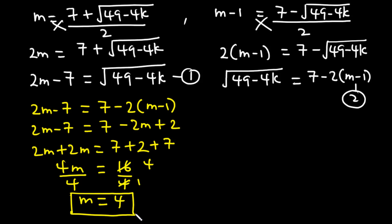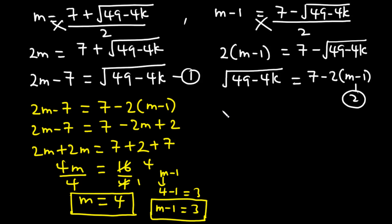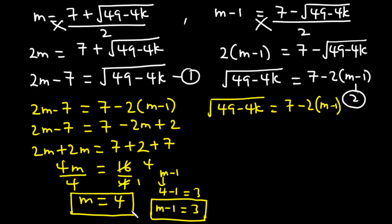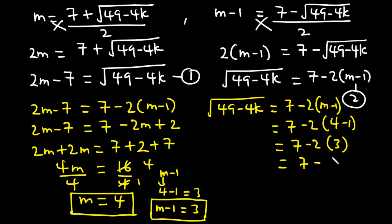So one of the roots is M equals 4, and M minus 1 equals 3, which is the second root of the equation. To find the value of K, using equation 2: the square root of 49 minus 4K equals 7 minus 2 times bracket M minus 1. Substituting M equals 4: 7 minus 2 times bracket 4 minus 1 equals 7 minus 2 times 3 equals 7 minus 6 equals 1. So the square root of 49 minus 4K equals 1.